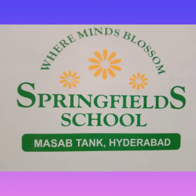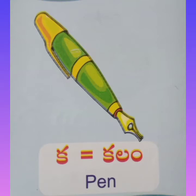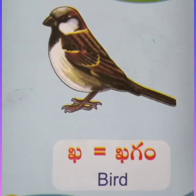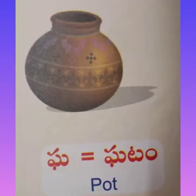Assalamu alaikum. Good morning, children. In the previous class you have learned the letters Ka — kalam (pen); Ka — khagam (bird); Ga — gada (mace); Ga — ghatam (pot).